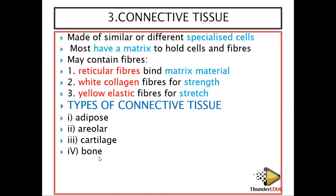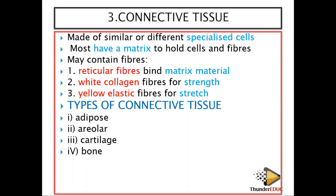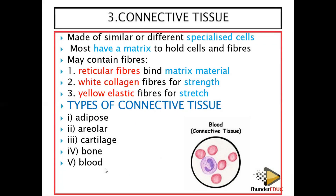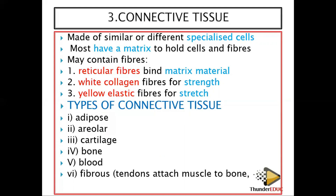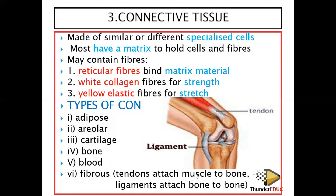Number four is bone. Bones are tissues — they have cells, and although they are hard, those cells can grow. Blood is also a tissue; it has different cells performing a special function. The last type is fibrous tissue, which includes tendons and ligaments. Tendons attach muscle to bone, and ligaments attach bone to bone.